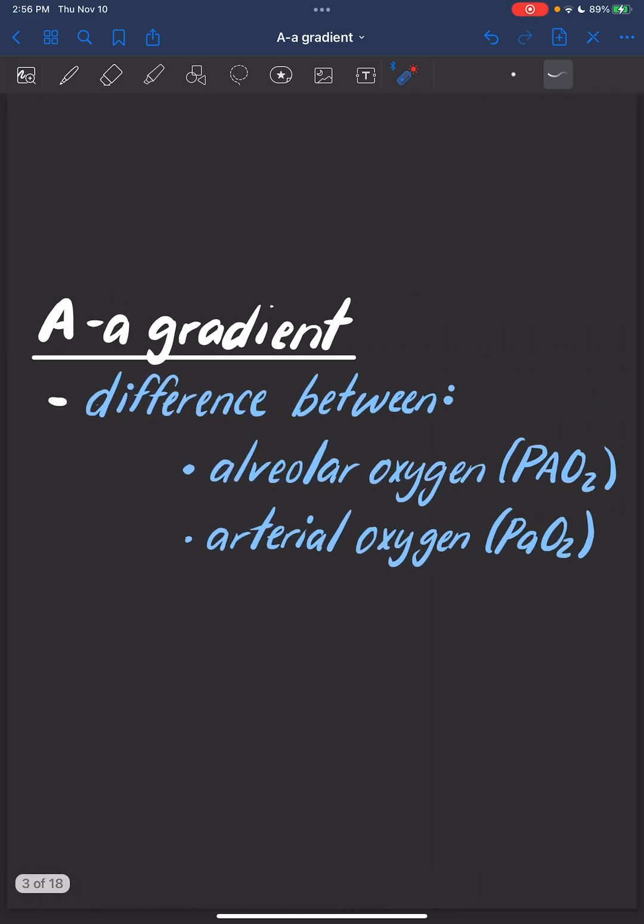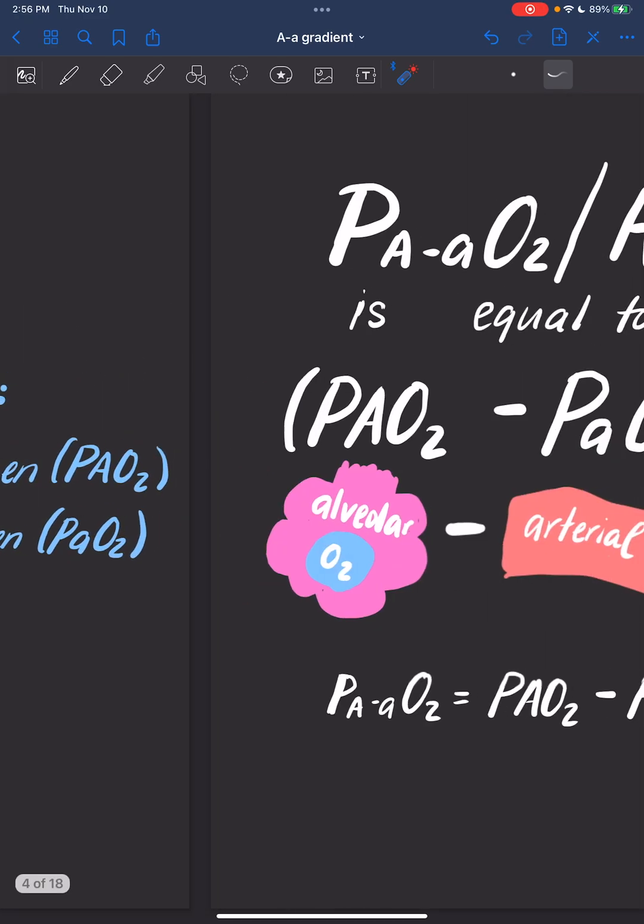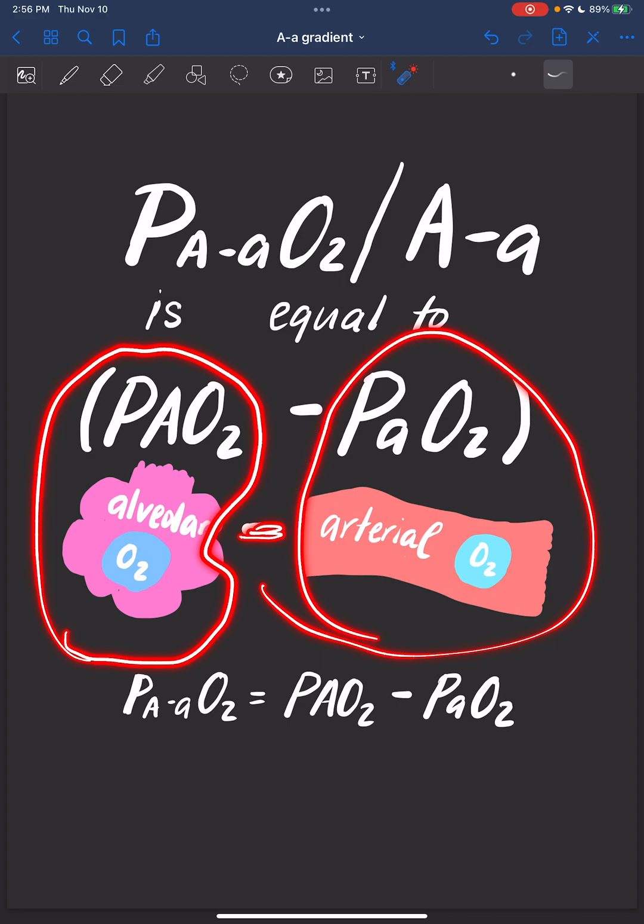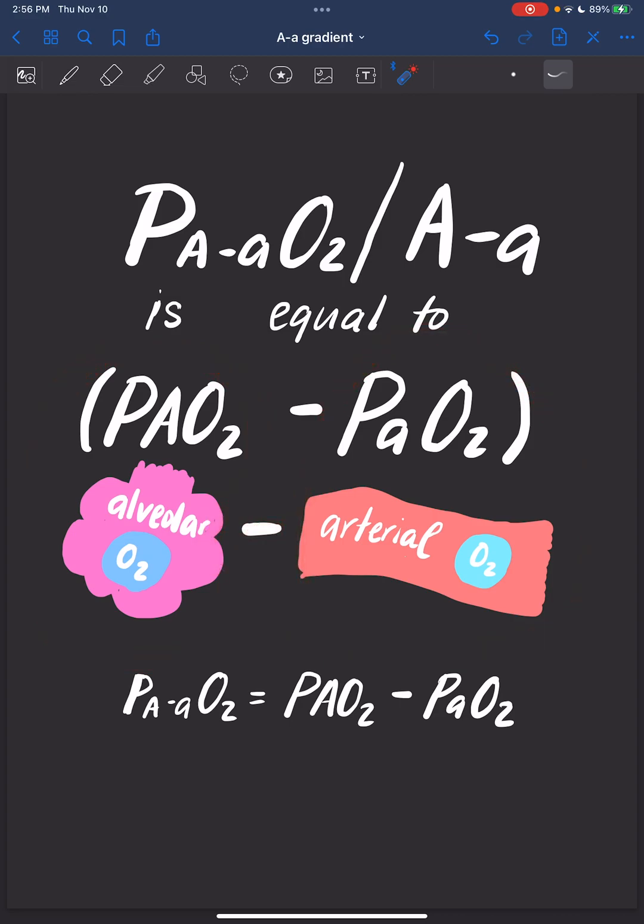The A-a gradient is the difference between alveolar oxygen and arterial oxygen. For the visual people like me, we're going to take our alveolar oxygen and minus our arterial oxygen. Remember, alveolar oxygen has a capital A and arterial oxygen has a lowercase a.